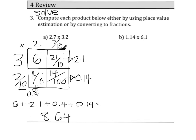6 plus 2.1 is 8.1, plus 0.4 is 8.5, and then plus 14 hundredths is 8.64. So now I'm gonna go over to B and do this one.